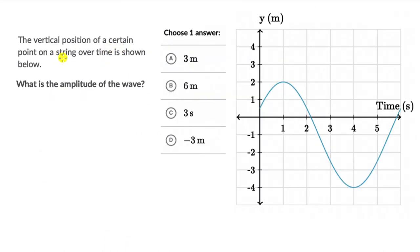Here, the vertical position of a certain point on a string over time is shown. What is the amplitude of the wave? Okay, we need to choose one answer and we have a displacement time graph. Again pause the video, first try this one on your own.